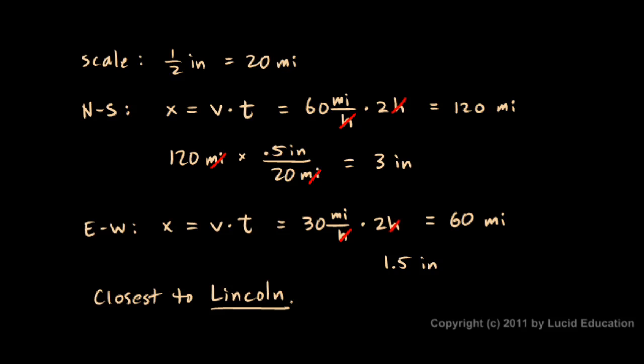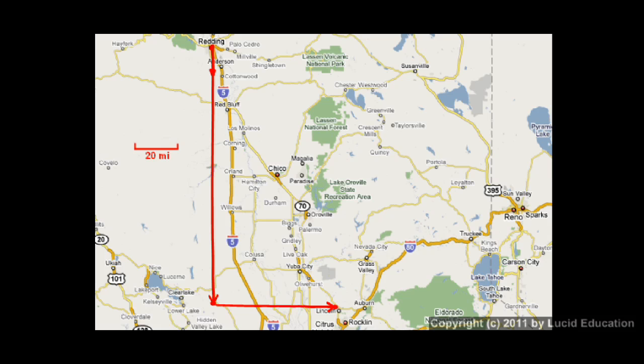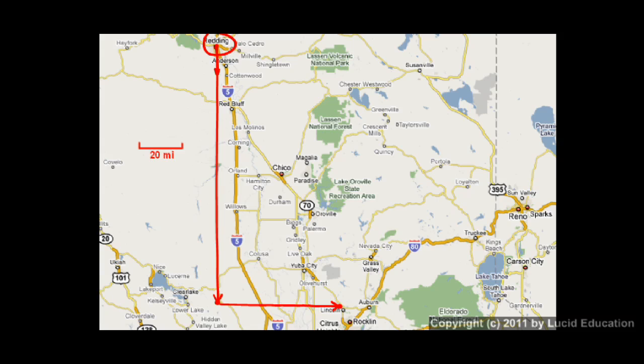Now we're also asked, how far will it be from Redding after 2 hours? So the distance from Redding, that would be the distance from Redding down to here, down to Lincoln. So let's draw that line in. And we want to calculate that distance. We can do that with the Pythagorean theorem. We've just calculated that this long distance is 120 miles. And this shorter one here is 60 miles. So we can find the length of the hypotenuse. We'll just call it D for distance. And let's do the calculation.